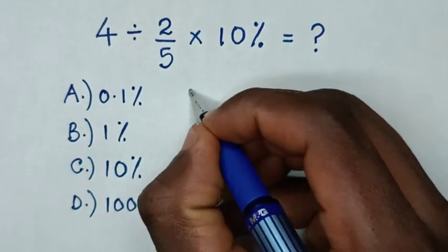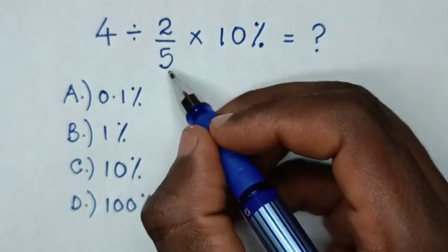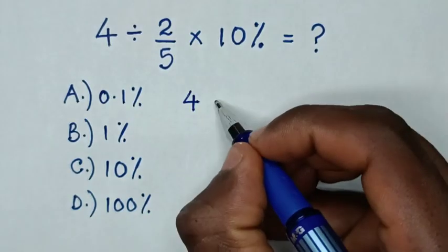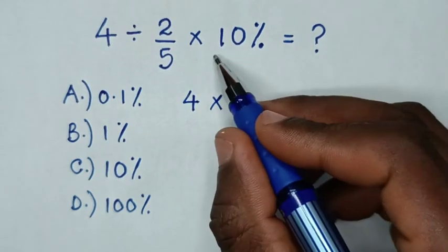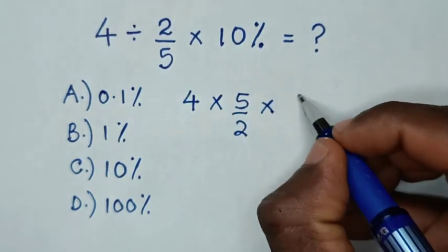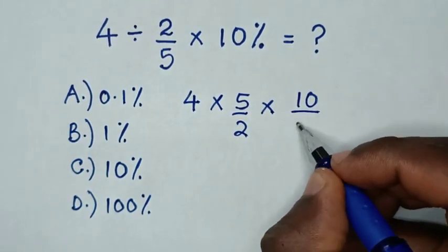So, our expression will be 4, then divided by 2 over 5, reciprocal, is times 5 over 2, then times 10% into fraction, is 10 over 100.